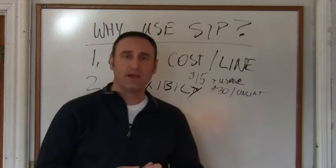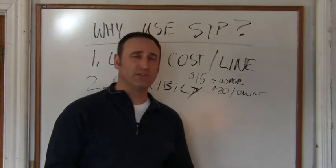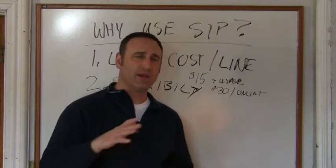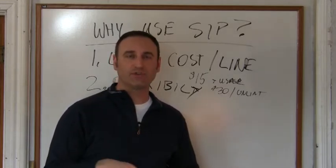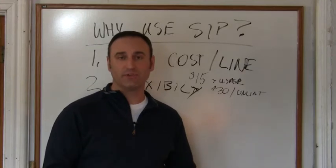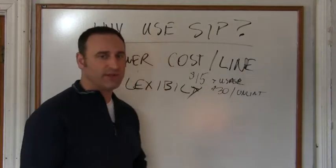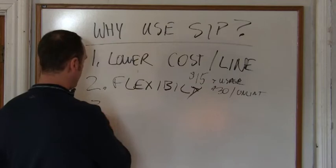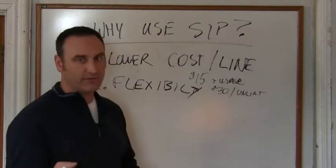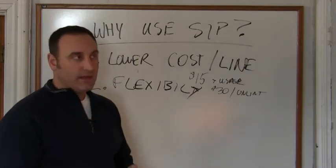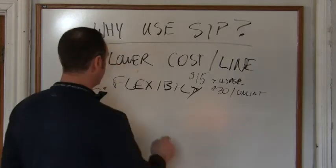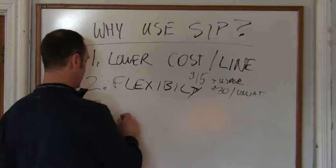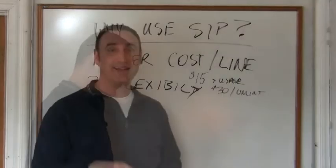You as the user have an interface, a graphical user interface that you can access online and go in and program some of the routing for each and all of the lines if you choose as the customer. So it gives you some flexibility over regular telephone lines where you'd have to call the phone company and make the change, and you know how it could take a while for that change to actually take effect, where this is automatically done.